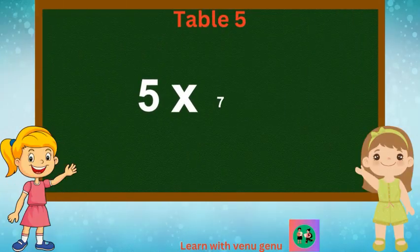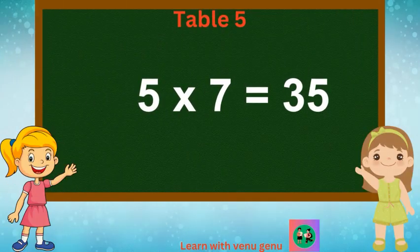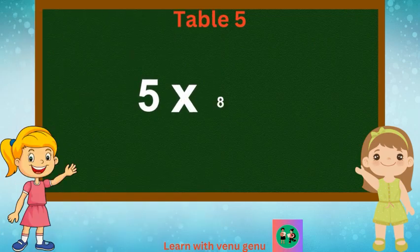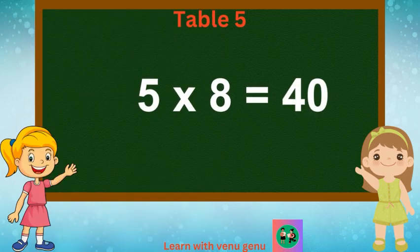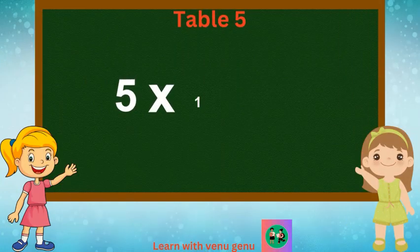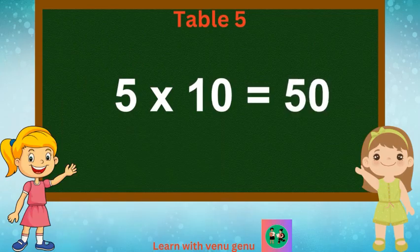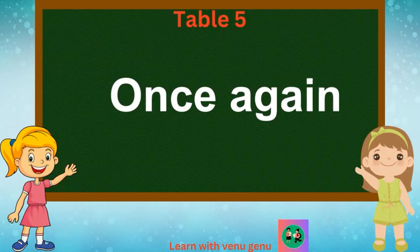5 7s are 35. 5 8s are 40. 5 9s are 45. 5 10s are 50. Once again.